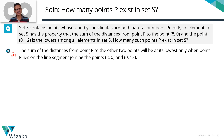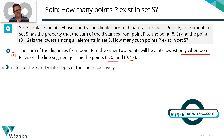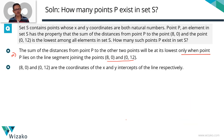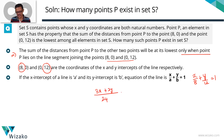The sum of the distances from point P to (8, 0) and (0, 12) will be at its lowest only when point P lies on the line segment joining these two points. Now we need to find how many values P can take. First, let's find the equation of this line. Since (8, 0) and (0, 12) are the x-intercept and y-intercept respectively, the equation is x/8 + y/12 = 1. Taking the LCM of 8 and 12, which is 24, we get 3x + 2y = 24.